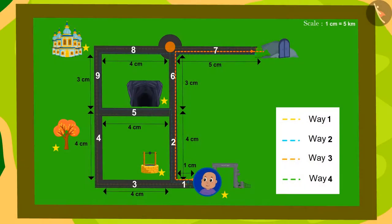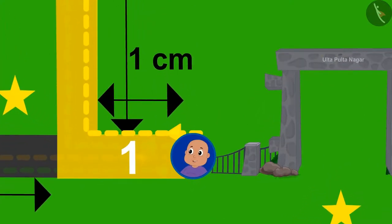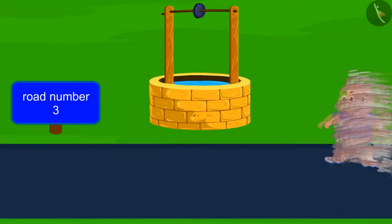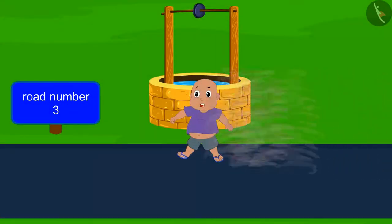Bablu was going towards the shortest path mentioned by us when suddenly he was pulled towards road number 3 towards the magical well.